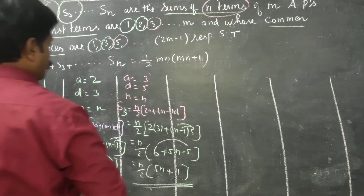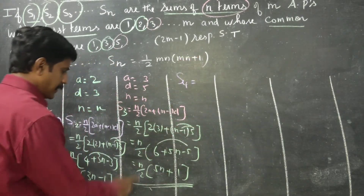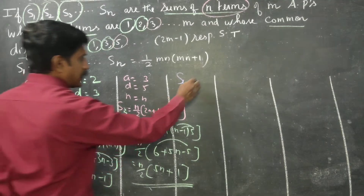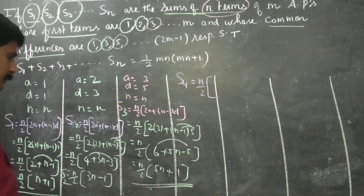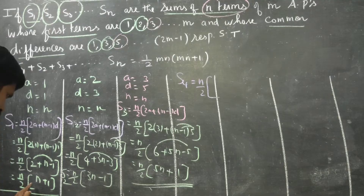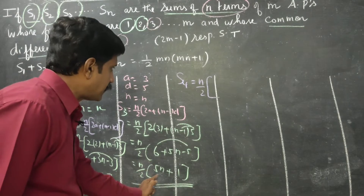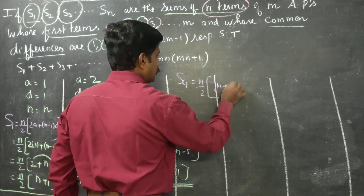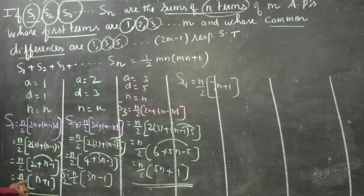For S4: a is 4 and d is 7. Applying the formula gives S4 equal to n by 2 into 7n plus 1.